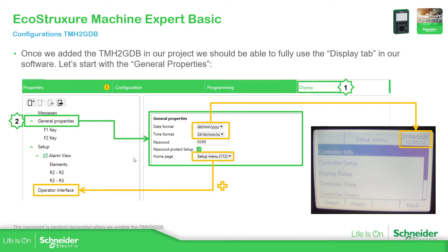Now we can select different home pages. As you can see, here we can select the operator interface. By default there is nothing here, so we can add some pages, but we're going to cover that later.